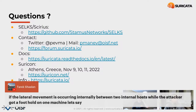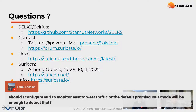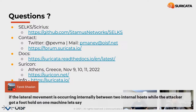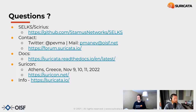Question from the audience: If lateral movement is occurring internally between two internal hosts while an attacker has a foothold on one machine, should I configure Suricata to monitor east-to-west traffic, or will default promiscuous mode be enough? Peter: There's nothing specific you need to configure Suricata for east-to-west traffic — except to correctly define your home networks and critical server infrastructure like databases, HTTP, DNS, domain controllers, and file servers in the Suricata YAML config.